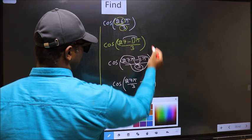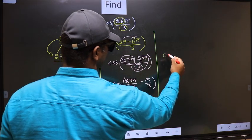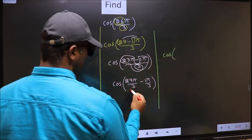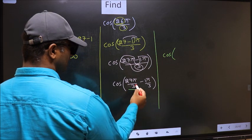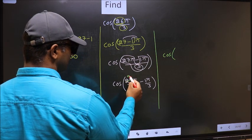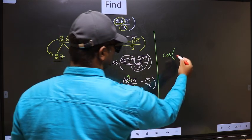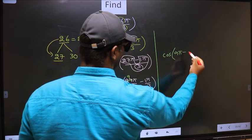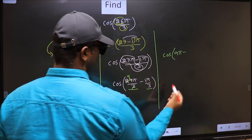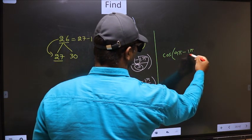Next, now here you should cancel. 3 ones, 3 nines, so we get 9π minus this no change, 1π by 3.